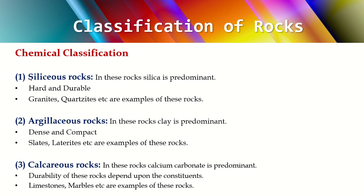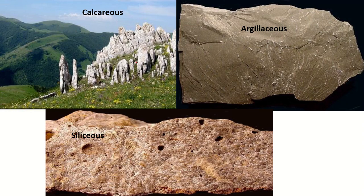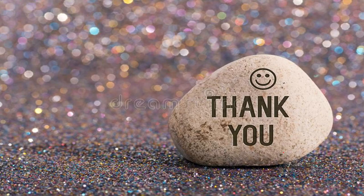An easy way to remember chemical classification: siliceous starts with S — silica is predominant. Argillaceous starts with A — alumina or clay is predominant. Calcareous starts with C — calcium is predominant. You can see the figures showing calcareous, argillaceous, and siliceous rocks. That's all about the classification of rocks — hope you understood the video, thank you.